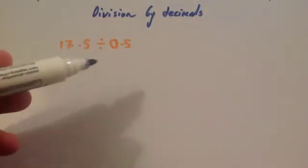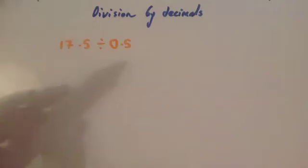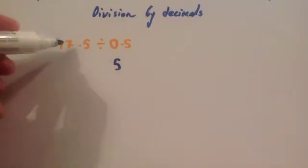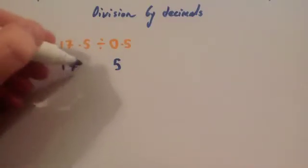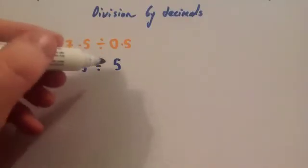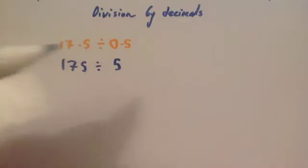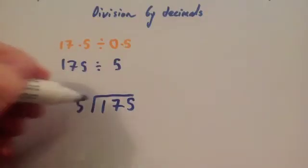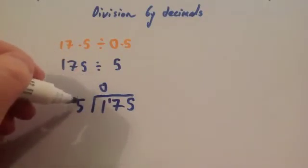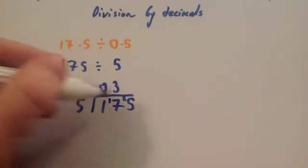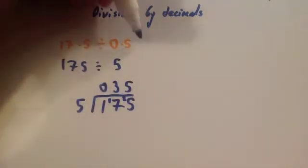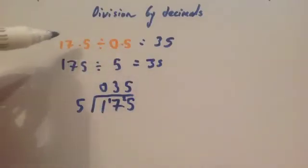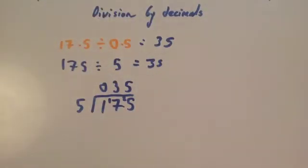Now we're going to look at 17.5 divided by 0.5. Dividing by 0.5 can be quite tricky, so multiply both numbers by 10: 0.5 becomes 5, and 17.5 becomes 175. So we do 175 divided by 5. Using short division: 5 into 1 doesn't go — remainder 1. 5 into 17 goes 3 times, remainder 2. 5 into 25 goes 5 times. The answer is 35. Therefore, 17.5 divided by 0.5 equals 35.